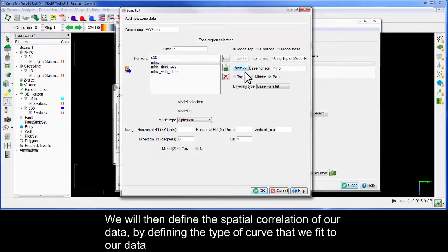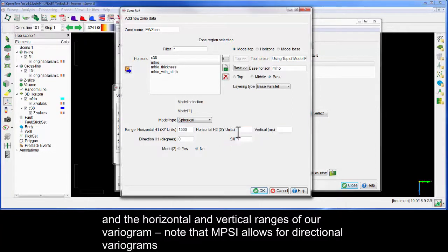We will then define the spatial correlation of our data by defining the type of curve that we fit to our data, and the horizontal and vertical ranges of our variogram. Note that MPSI allows for directional variograms.